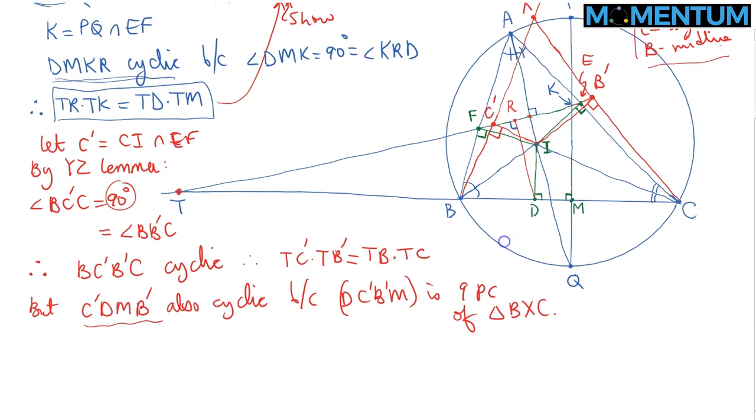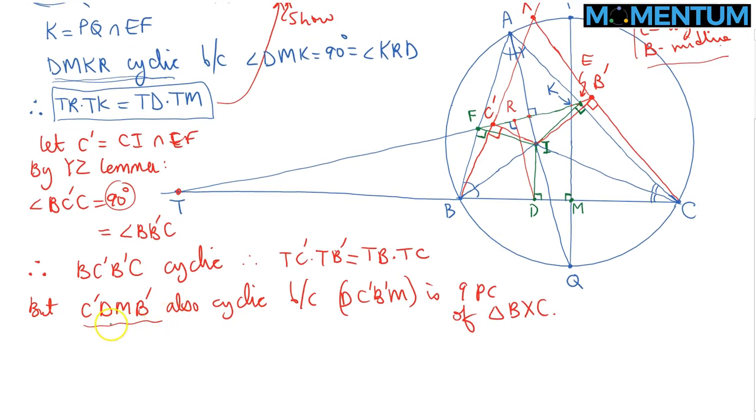Now let's take power of point T with respect to this circle as well. In that case, we would get TC' times TB' is equal to TD times TM.